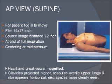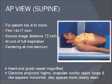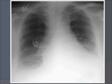Whenever it is possible to take a standing view, we always prefer a PA view. But sometimes patients are sick, or in pediatric patients, we have to take a supine view. In that case, we place the cassette or film behind the patient and X-rays come from the front — this is the AP view, or anterior-posterior view. The film is 14x17 inches and source-to-image distance is 72 inches. However, there are some drawbacks of an AP film: the heart and great vessels are magnified, the clavicles are projected higher, the scapulae overlie the upper lung fields, the ribs appear horizontal, and the disc spaces are more clearly seen. So while this is not a preferred view, in sick patients or pediatric groups we have to take an AP view.